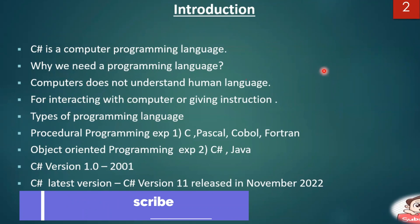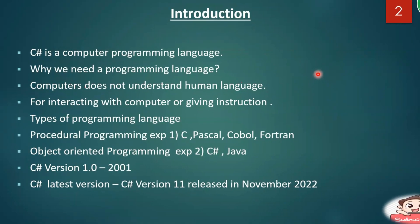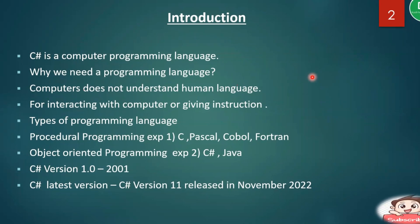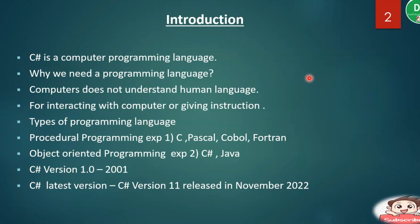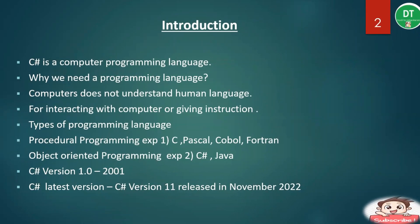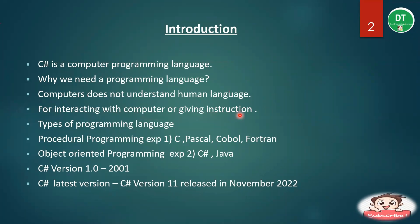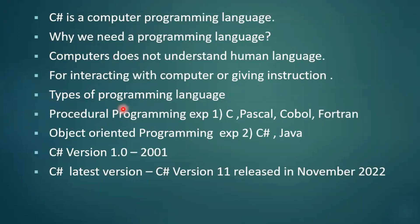Generally, in a programming language we have instructions that tell the computer to perform some action. We use programming languages for interacting with the computer or giving instructions to it. There are some types of programming languages — these include procedural programming language and object-oriented programming language.